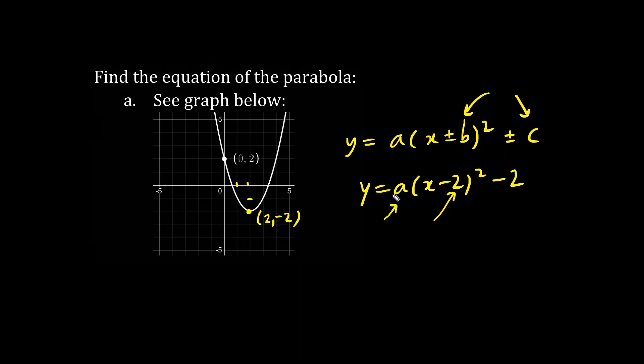Now in order to find out A, we substitute 0 comma 2. So the x value is 0 and the y value is 2. So we have 2 equals A, 0 minus 2 squared minus 2. Zero minus 2 is negative 2. And when we square it, it's going to be 4. So 2 equals A times 4, which is 4A, minus 2.